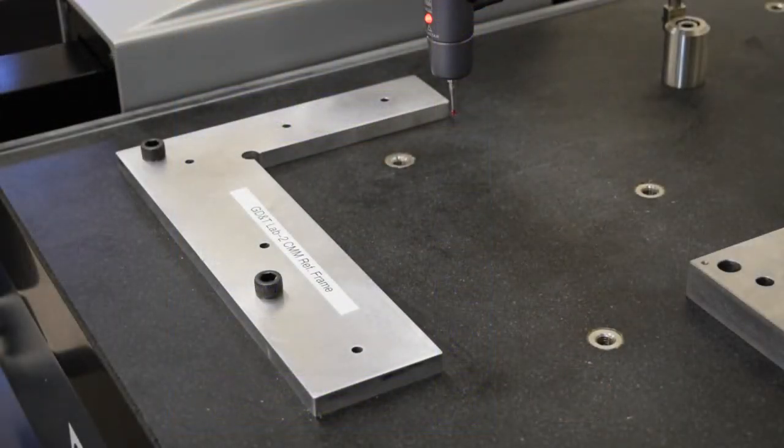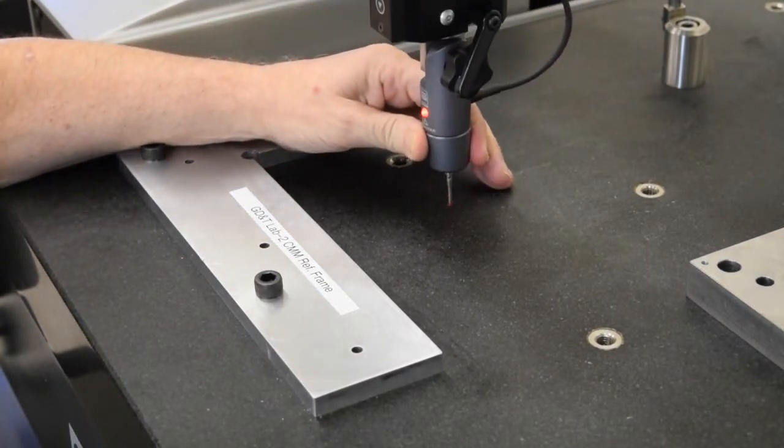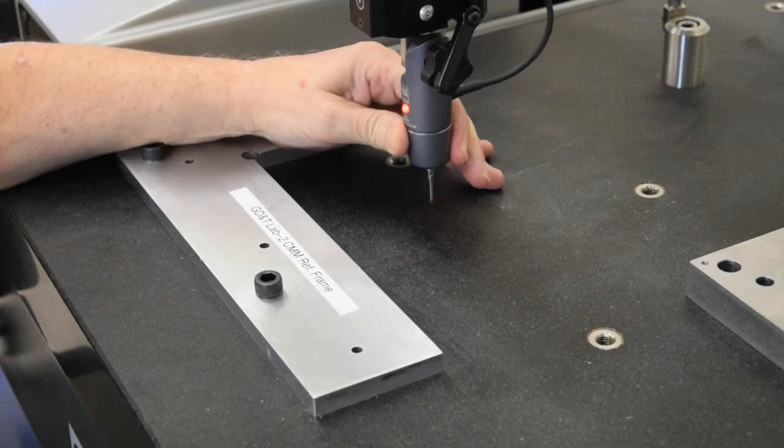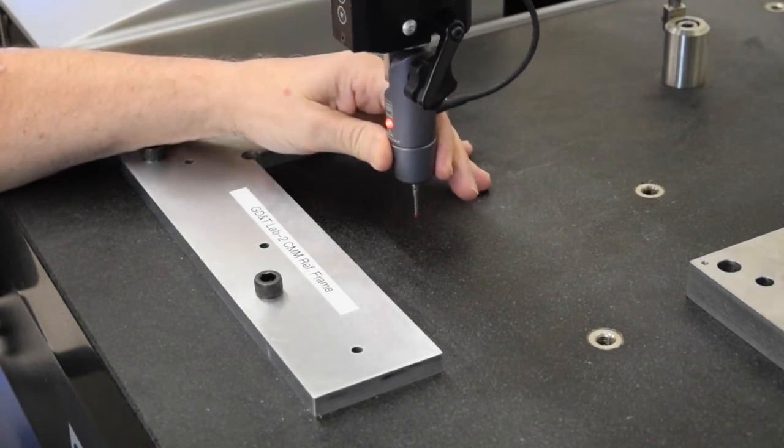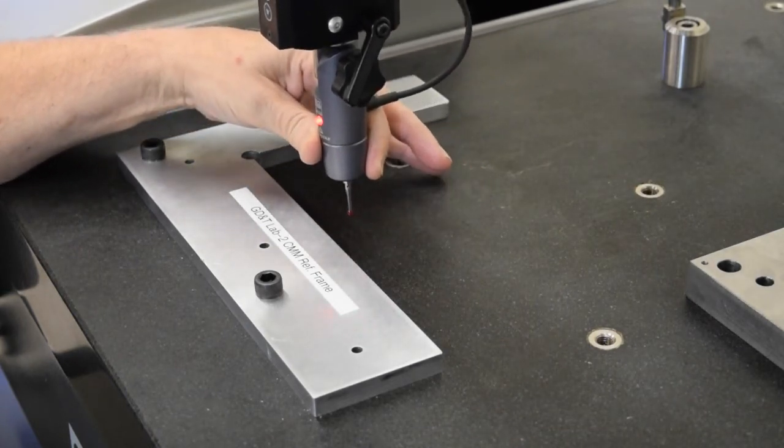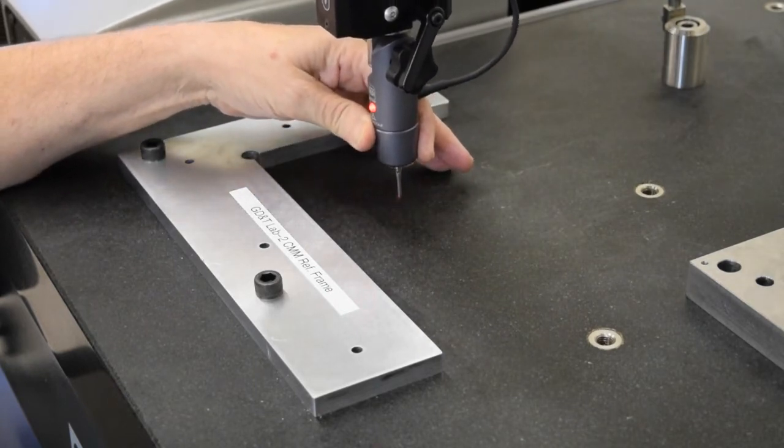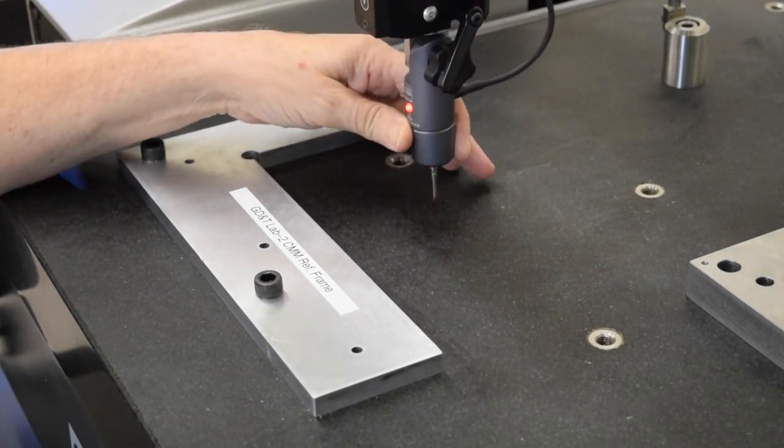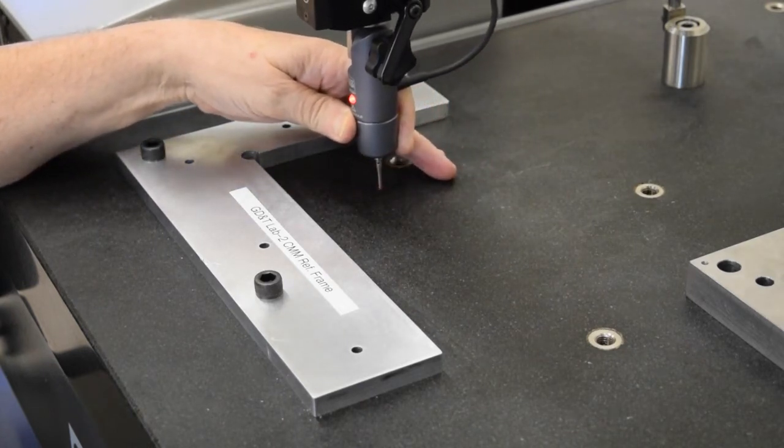Once the probe tip is calibrated, we're ready to start setting our datums. And the first datum, or datum A, is going to be the granite surface plate itself. And we're going to come through and just gently touch the probe to the granite surface plate in a number of places. Use a kind of a zigzag pattern or somewhat random pattern. If you just go around in a circle or a rectangular pattern, it's liable to think you're measuring a circle or a rectangle and not the surface of the plate.